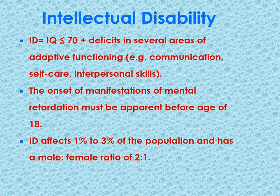There is one more criterion needed to diagnose intellectual disabilities. The child must have deficits in several areas of adaptive functioning, such as communication, self-care, or interpersonal skills. The onset must be during the developmental period, before age 18. It affects 1 to 3% of the population, with a male-to-female ratio of about 2 to 1. Most neurodevelopmental disorders — such as intellectual disability, ADHD, and autism spectrum disorder — are more prevalent in males than in females.